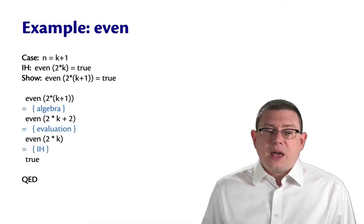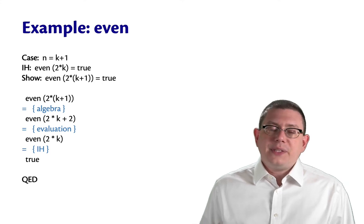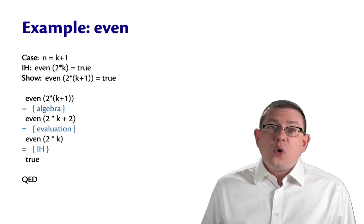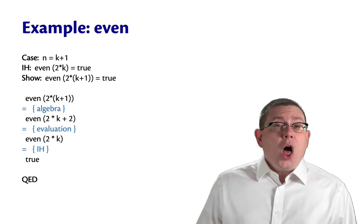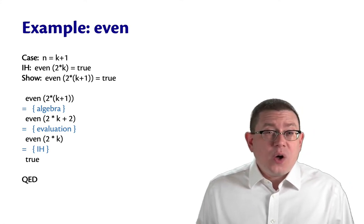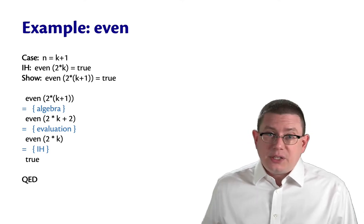I'll start on the left-hand side. Even of 2 times K plus 1. Well, how is that going to evaluate? We know how algebra evaluates. We know how numbers work. That's not always the same as how OCaml integers work, right? We know that OCaml integers are only 63 bits. We know that they can overflow.